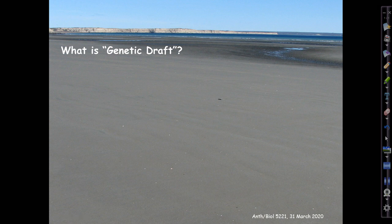In the previous lecture, Alan talked about a variety of modern techniques for detecting signals of adaptive evolution in patterns of genomic variation. In this lecture, we're going to talk about a consequence for variation generally of adaptation going on throughout the genome. This is the process that Gillespie, the author of your textbook, has called genetic draft.